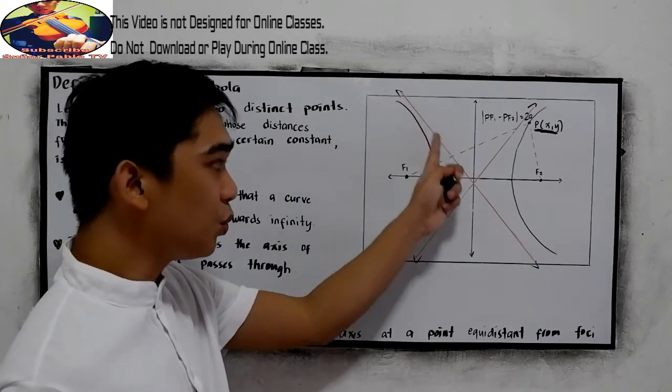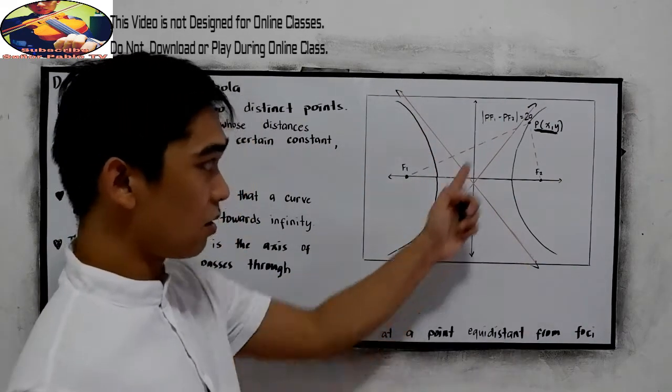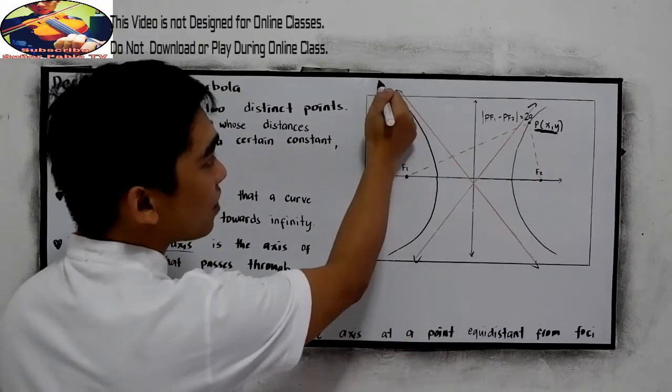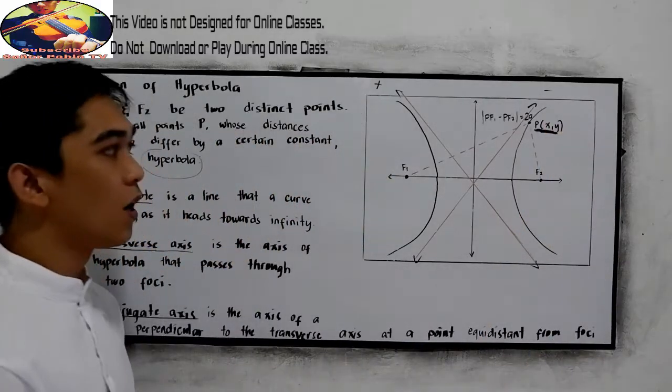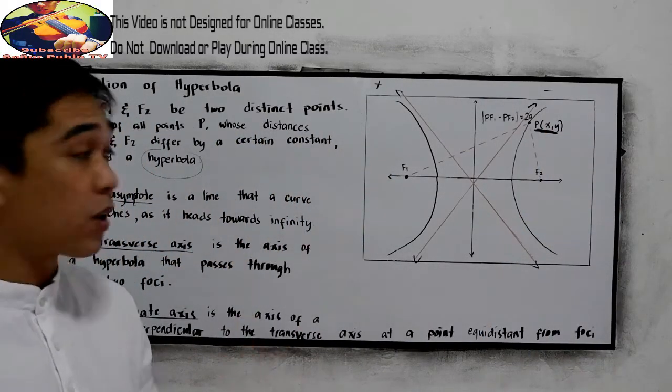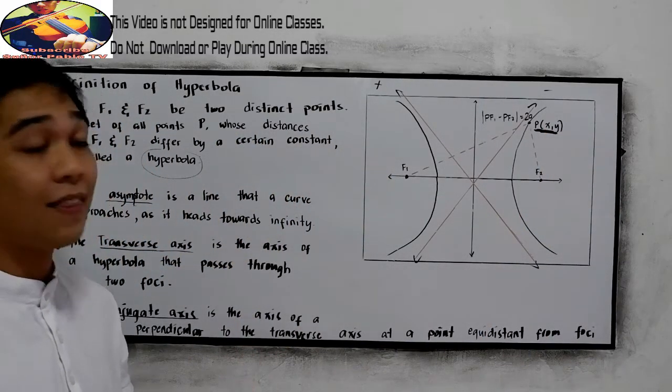Notice that we have two lines. The slope of this line is positive and the other line's slope is negative. In our examples, you will understand this better.